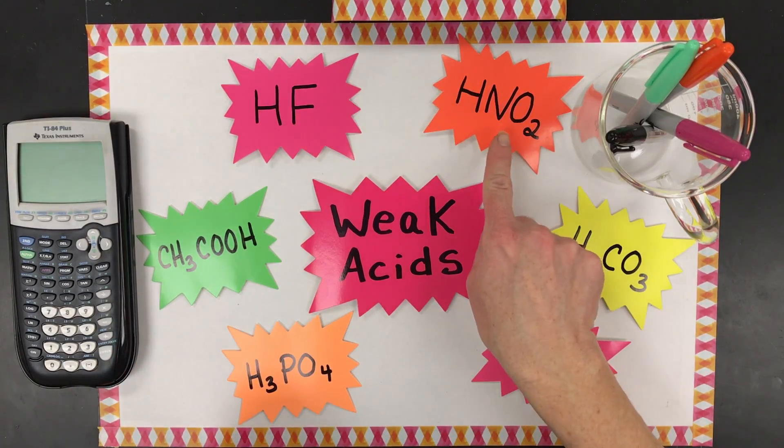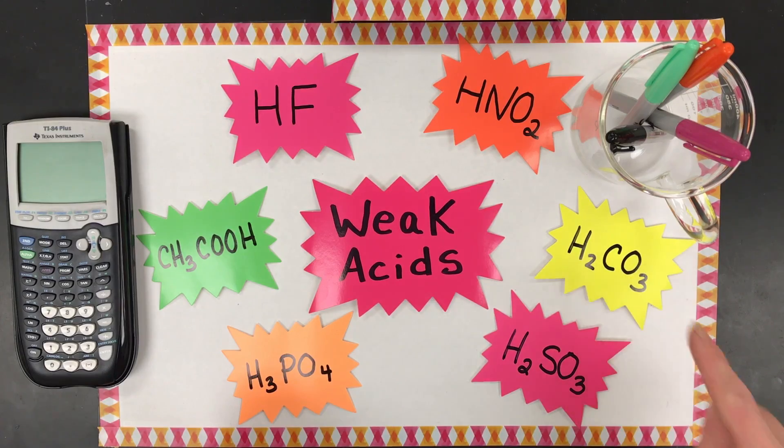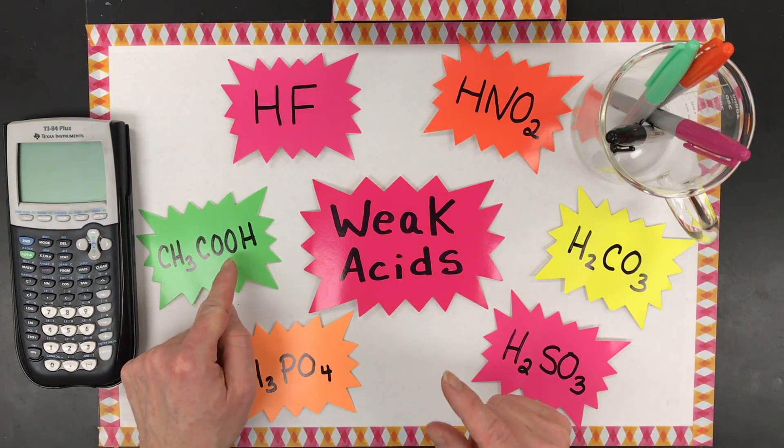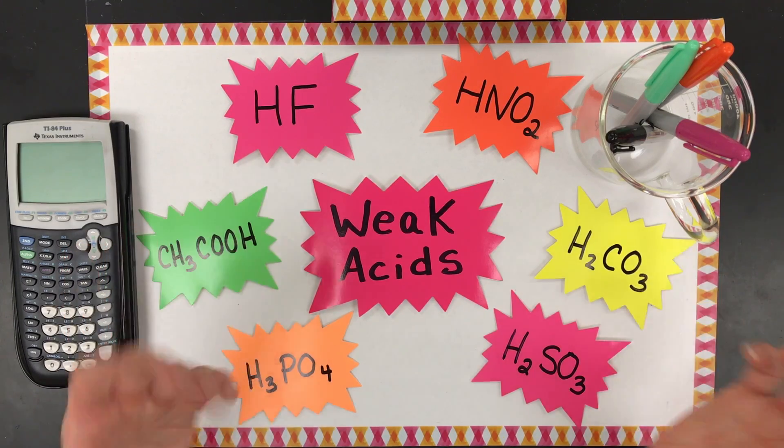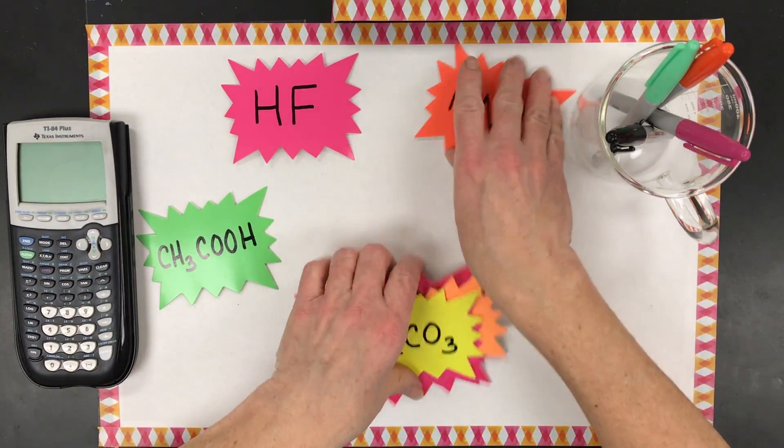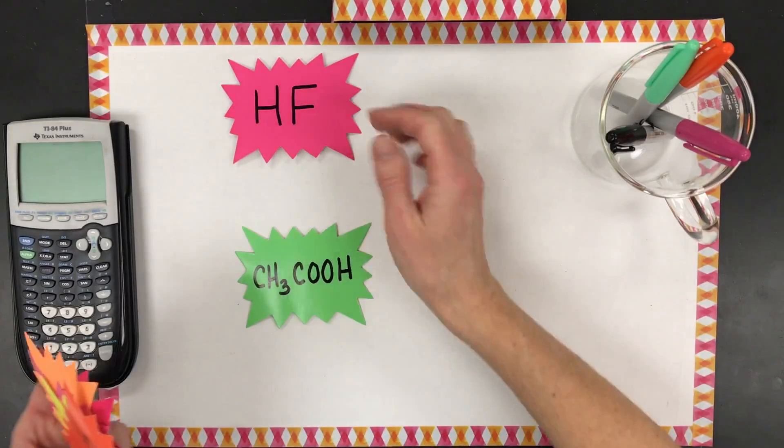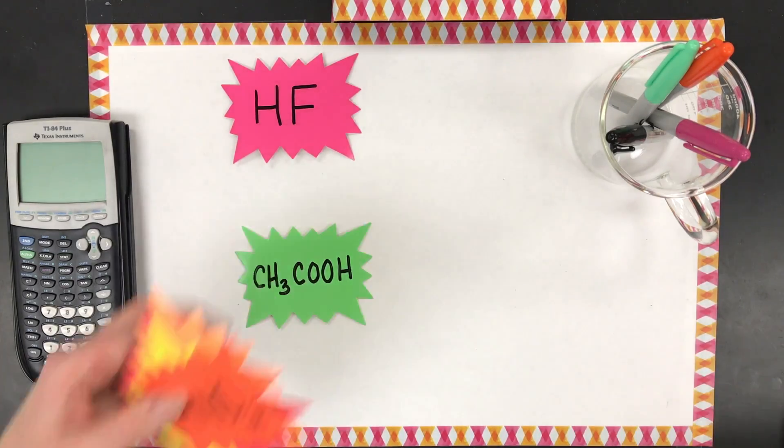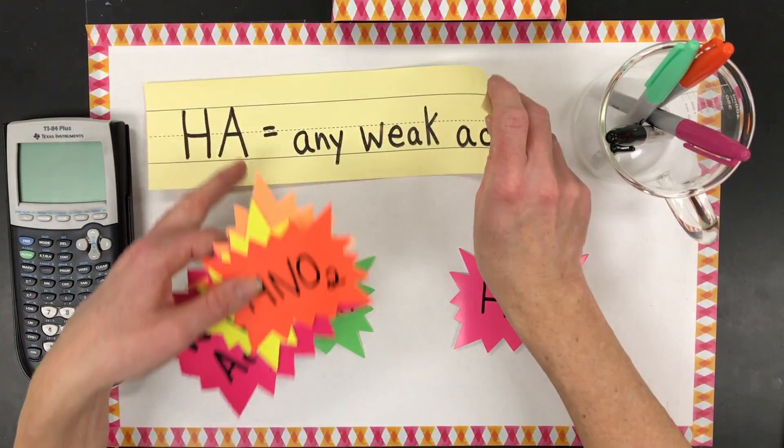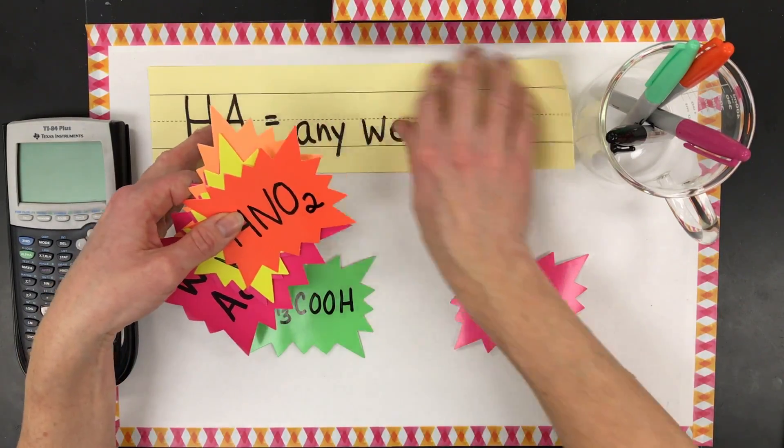So hydrofluoric acid, nitrous acid, carbonic acid, sulfurous acid, phosphoric acid, and acetic acid are some of the most common weak acids you'll see. We're going to do our calculations today with these two. But before we even move on to what makes something a weak acid, let's go through some facts.